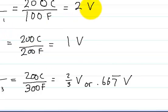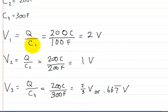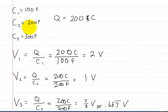V1 has the greatest voltage, and C1 has the lowest capacitance. C1 is 100 farads, but the voltage V1 is 2 volts. I hope this video made sense and you found it helpful.